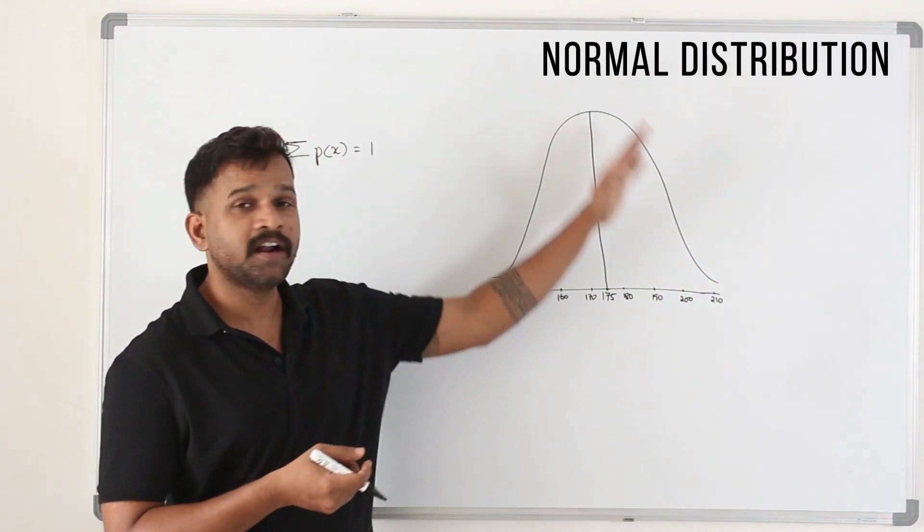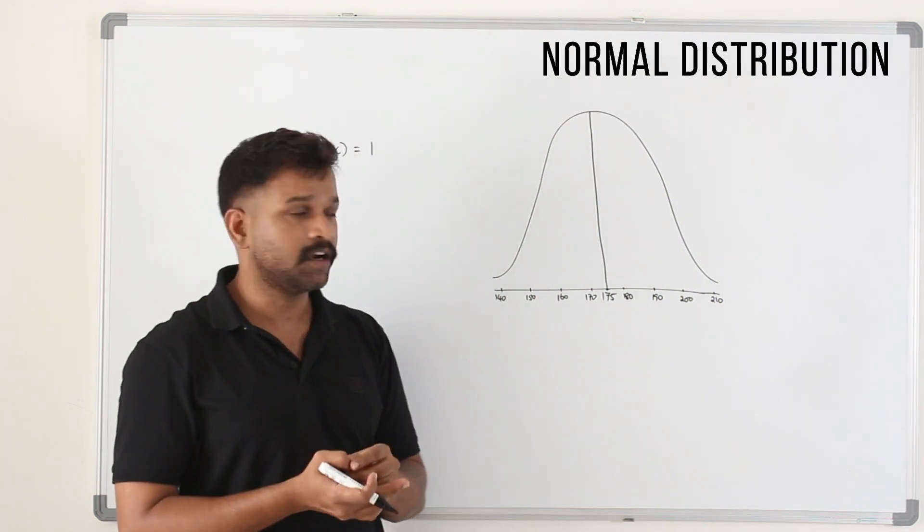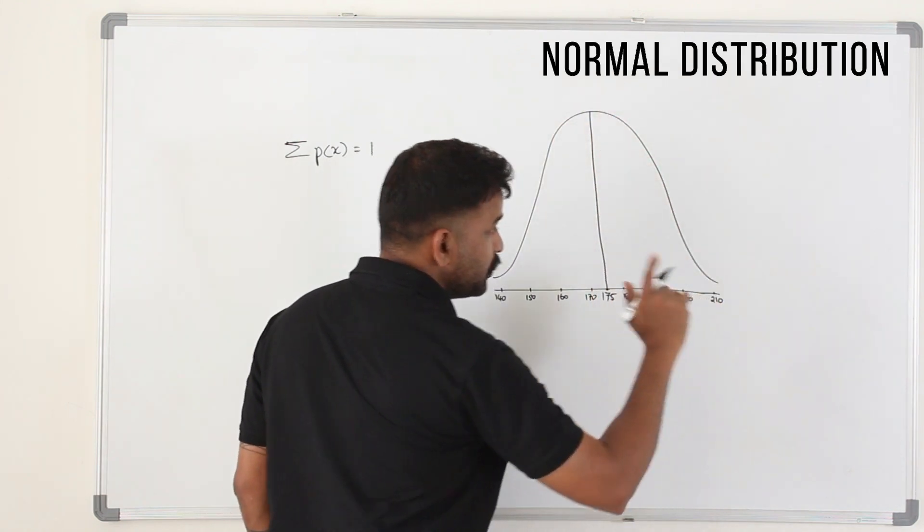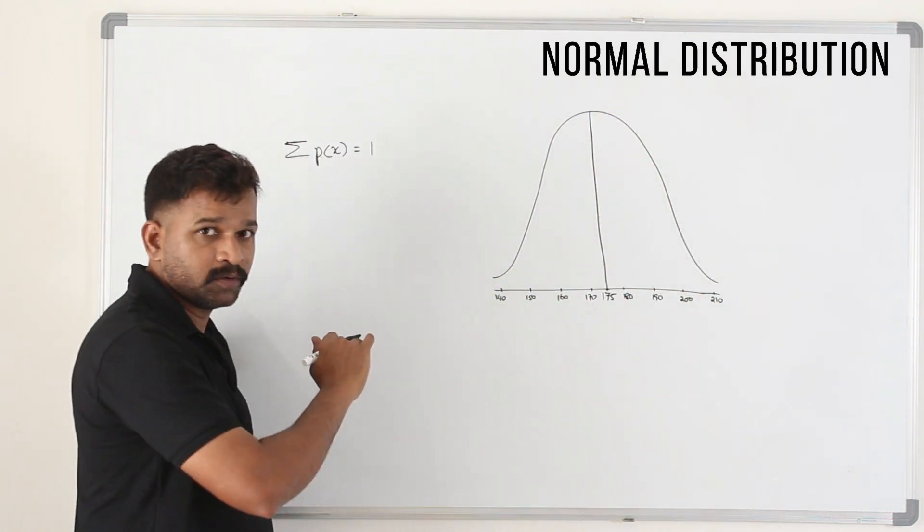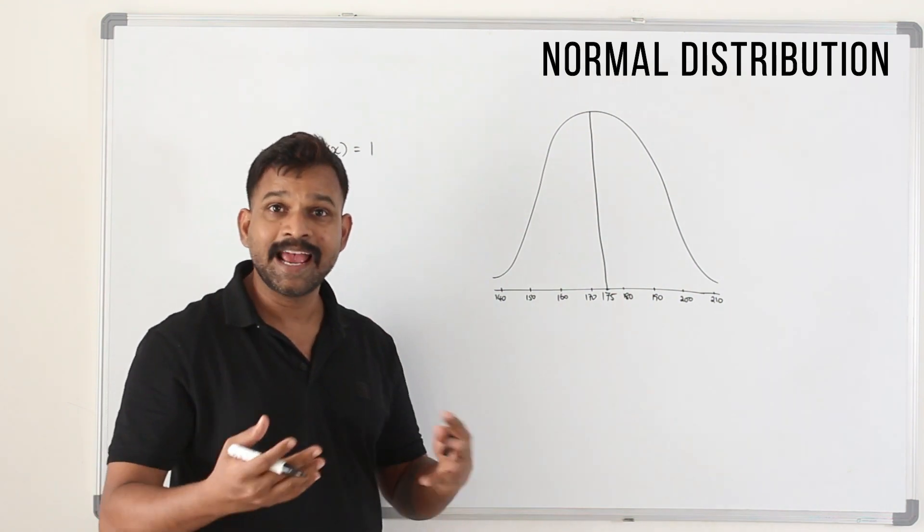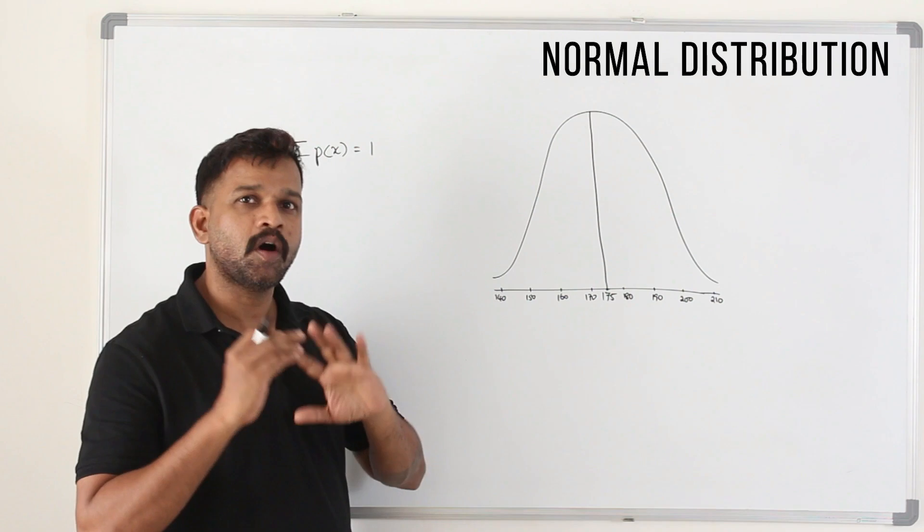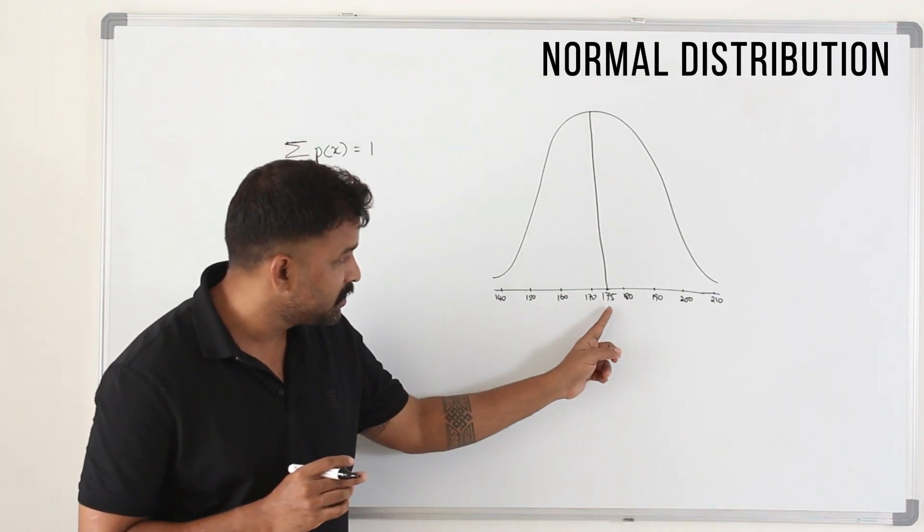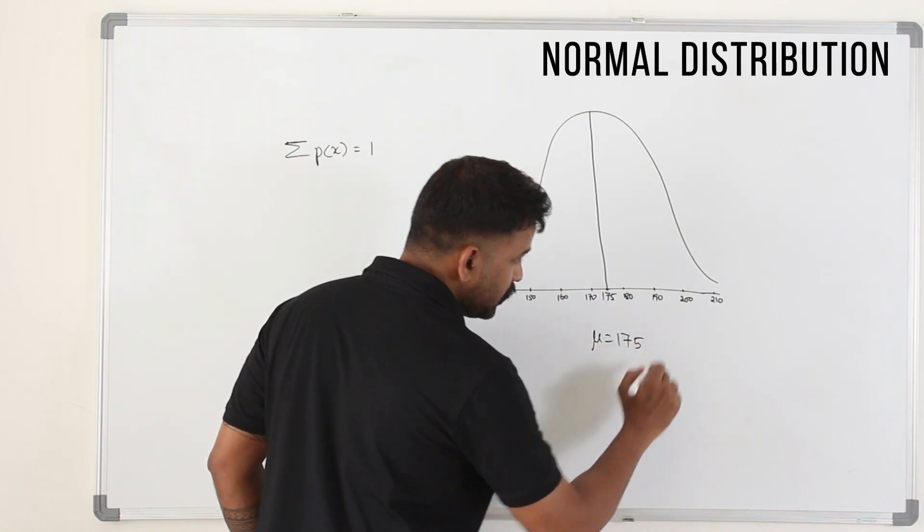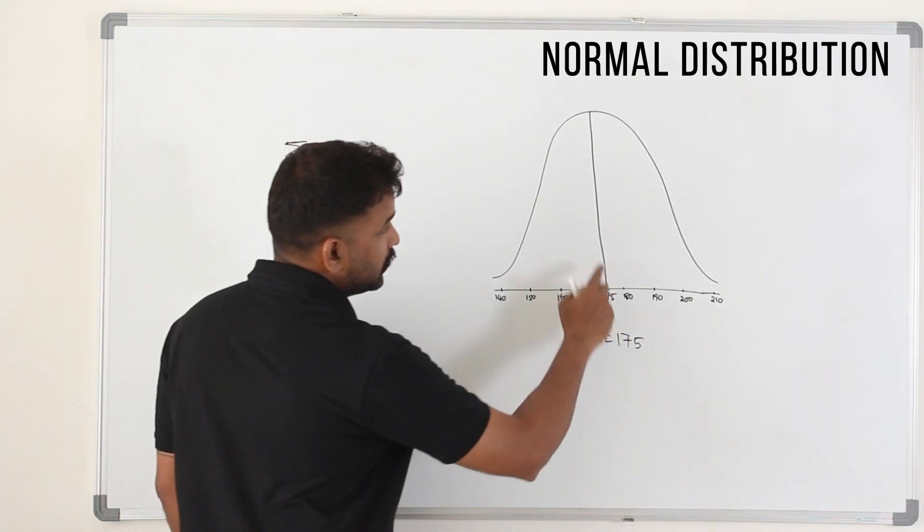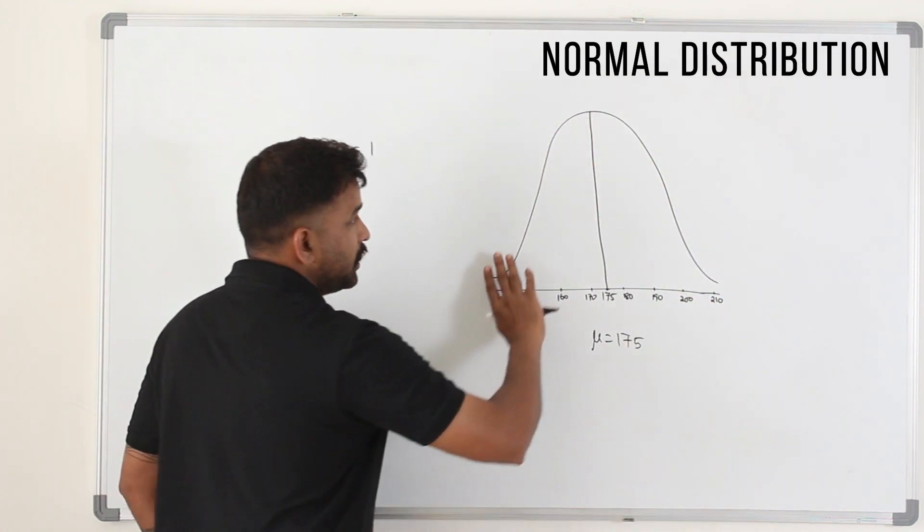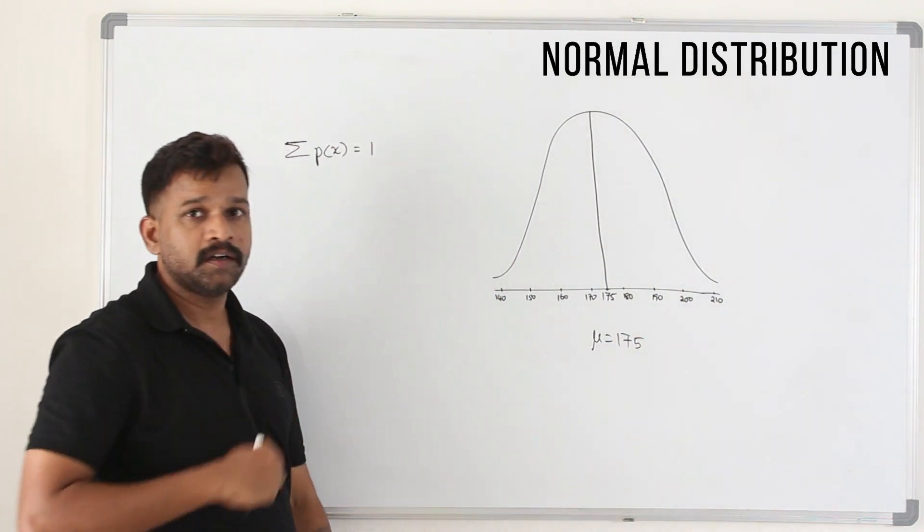When we say area under the curve, don't think about integration. Here we're talking about probability. This whole thing is going to be 1, the area under the curve. You'll understand better when we talk about how to use the tables. So don't worry about it. All you need to know is mean is in the middle, which is μ. In this case μ is 175. The curve is symmetrical about this middle line, and the area under the curve is 1.